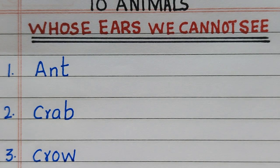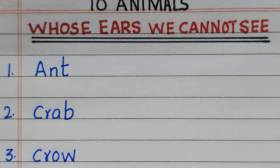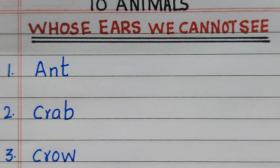The name of the first animal whose ears we cannot see is Ant. Second, Crab. Third, Crow.